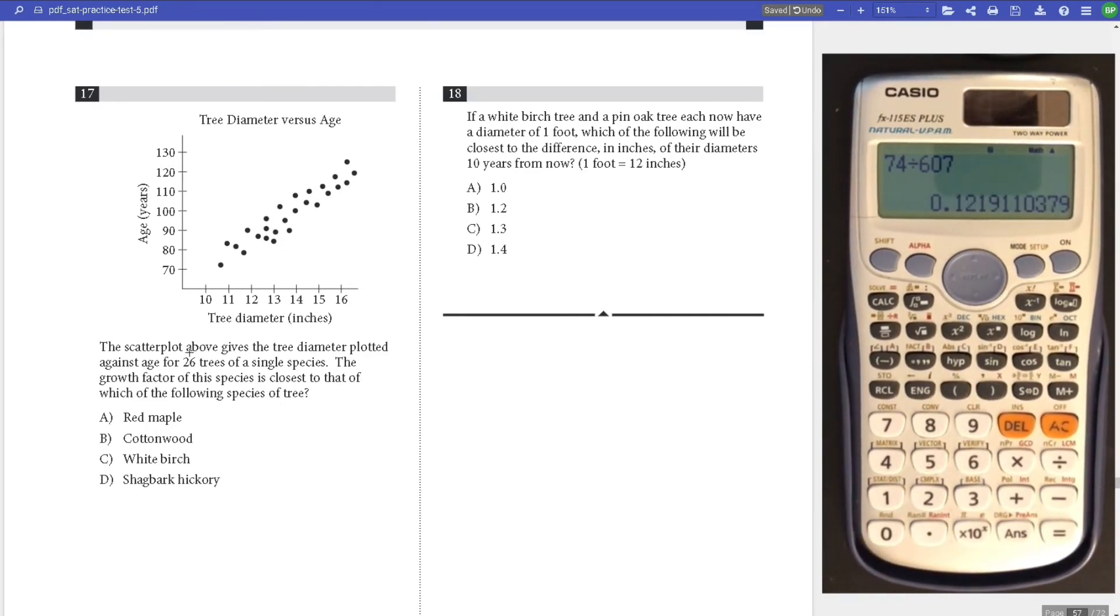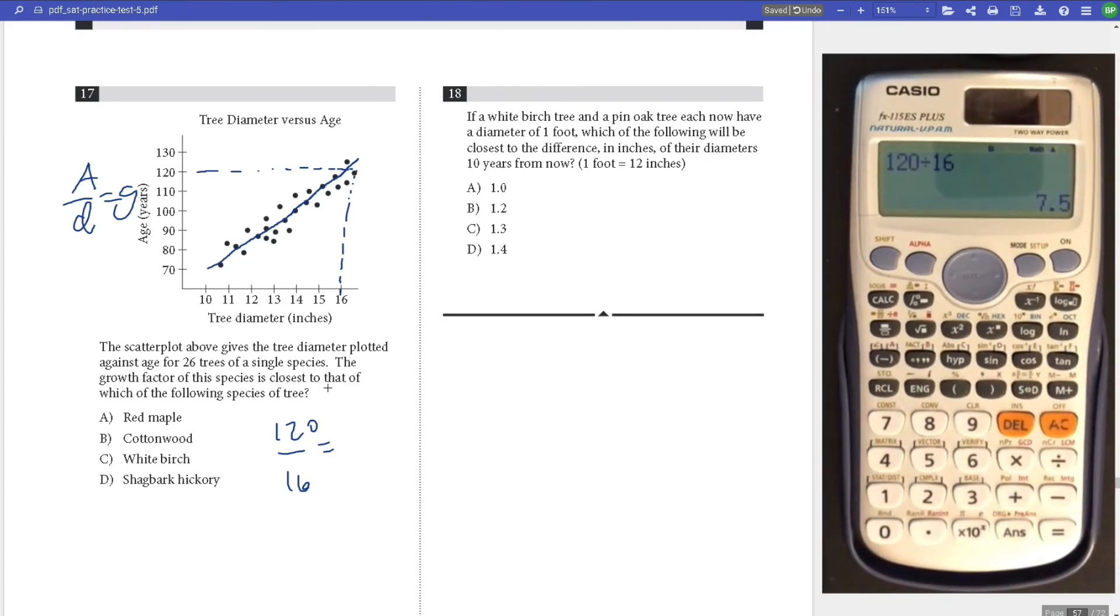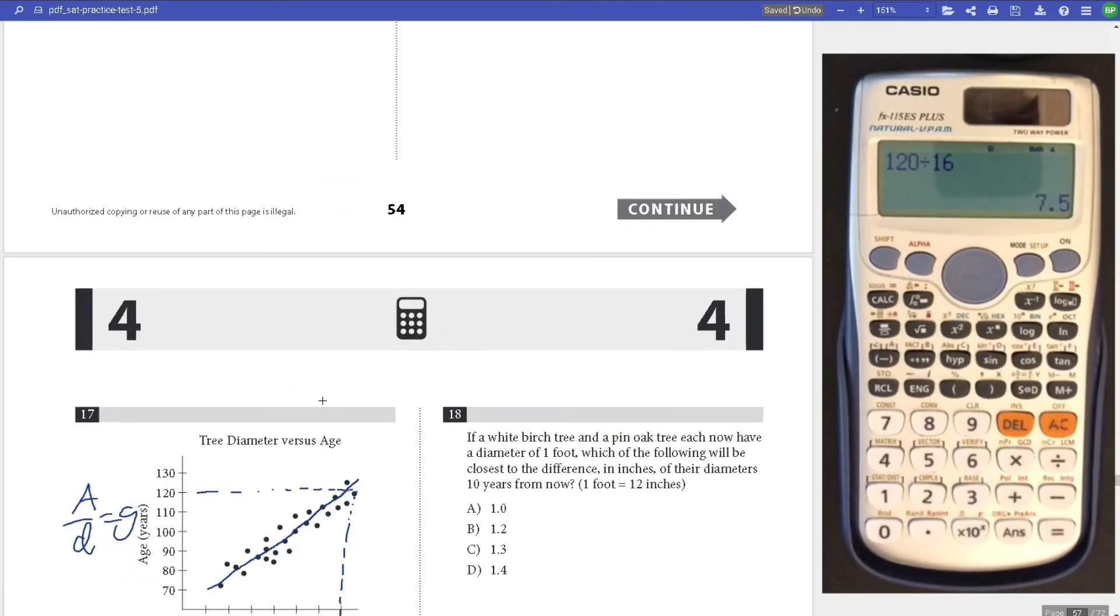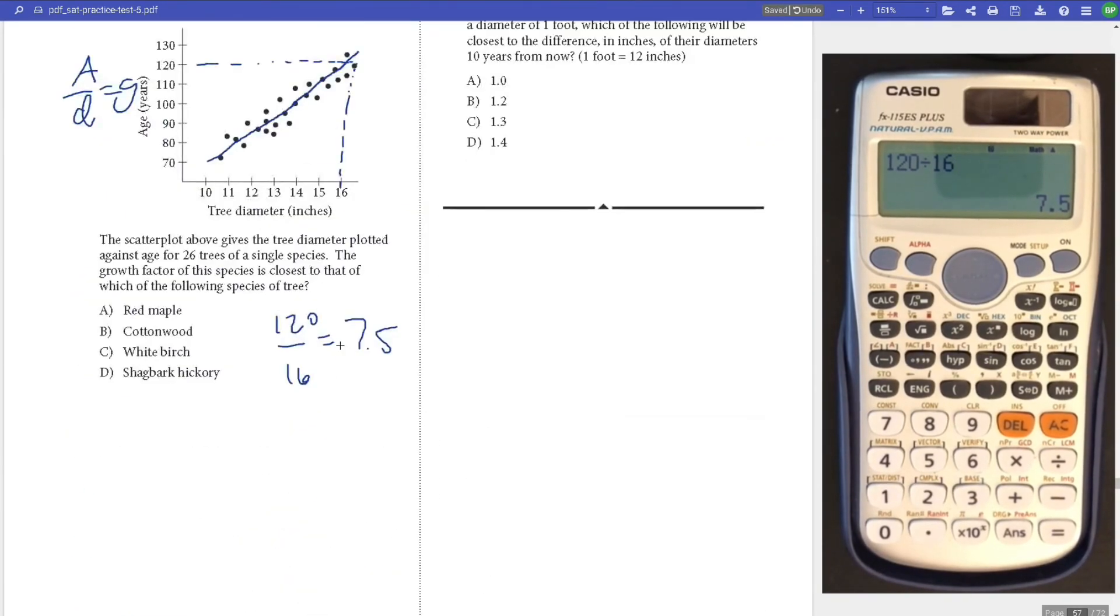Number 17, what is the growth factor? Let's look at the slope. Because we're doing age divided by diameter to get G. Let's just take 120 divided by 16 to see the growth factor. Use the calculator to get 7.5. Which one has 7.5? It looks like it is Shagbark hickory. Answer is D.